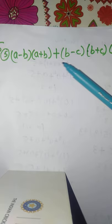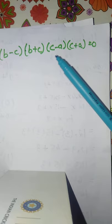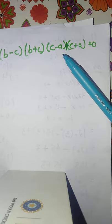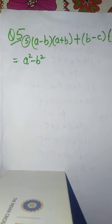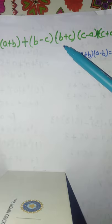Question number 5: (a - b)(a + b) plus (b - c)(b + c) plus (c - a)(c + a). Here one quantity is in minus and the other is in plus, so we use the identity (a + b)(a - b) equals a square minus b square. Applying this: the first term gives a square minus b square, the second gives b square minus c square, and the third gives c square minus a square.